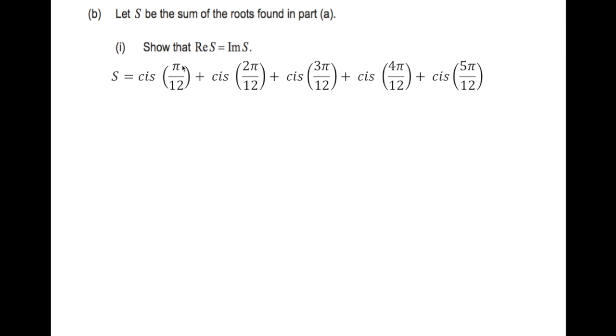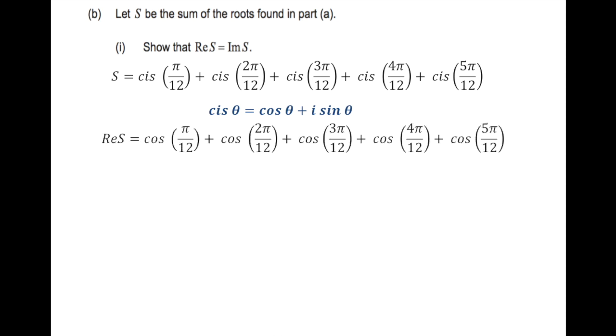For part (b), let S be the sum of the roots found in part (a). We must show that Re(S) equals Im(S). Our S is the sum of cis(π/12) through cis(5π/12). Since cis(θ) = cos(θ) + i·sin(θ), the real part Re(S) equals cos(π/12) + cos(2π/12) + cos(3π/12) + cos(4π/12) + cos(5π/12).